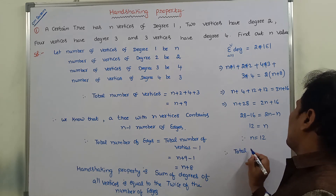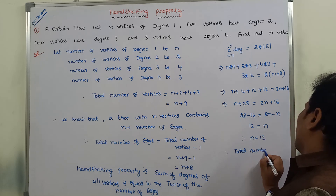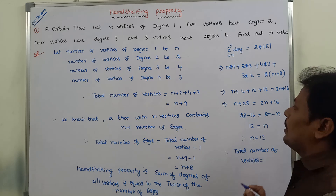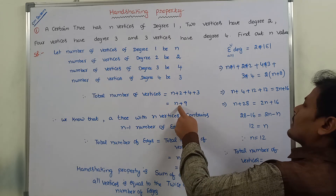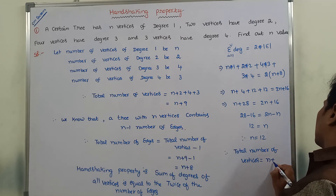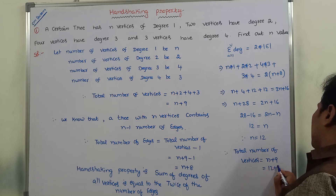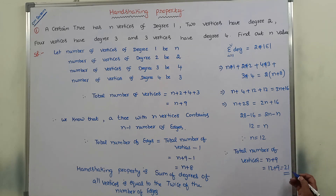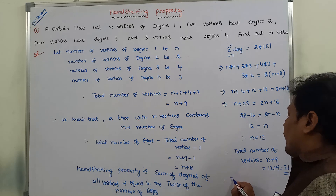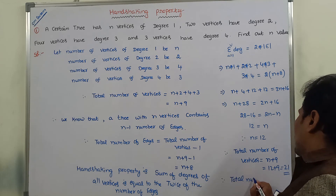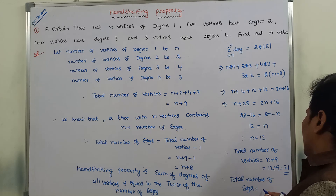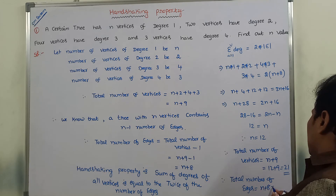The total number of vertices equals n + 9. Substituting n = 12, we get 12 + 9 = 21. So the total number of vertices is 21. The total number of edges equals n + 8 = 12 + 8 = 20. Wait — n + 8 where n is the total vertices 21, so 21 + 8 = 29. Therefore, there are 29 edges in the tree.